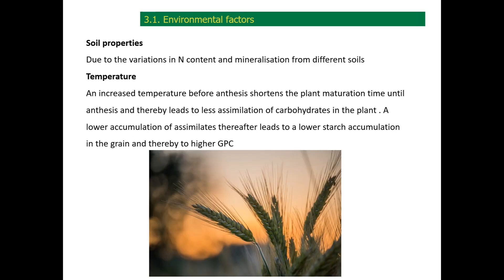The properties of the soil can also affect yield and protein formation. This is mainly associated with the content of nitrogen in the soil and the microbial population surrounding the roots, which affects nitrogen uptake through faster or slower mineralization of organic matter. The temperature that the cereals are exposed to during the growth cycle is also a determinant factor. An increase in temperature before flowering shortens plant maturation time, leading to less assimilation of carbohydrates, lower starch accumulation in the grain, and thus higher grain protein content.